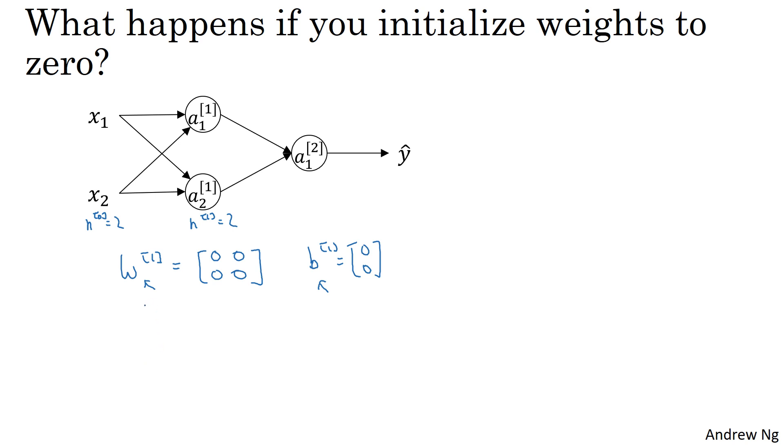So the problem with this form of initialization is that for any example you give it, you will have that a11 and a12 will be equal. This activation and this activation will be the same because both of these hidden units are computing exactly the same function. And then when you compute backpropagation, it turns out that dz11 and dz12 will also be the same, kind of by symmetry. Both of these hidden units will initialize the same way.